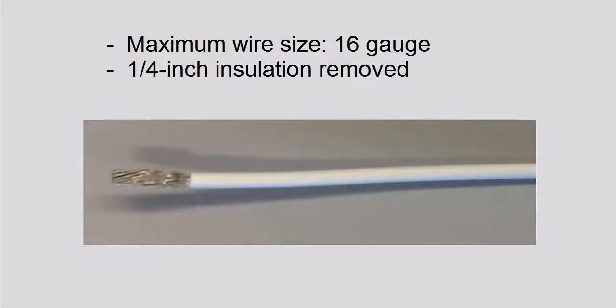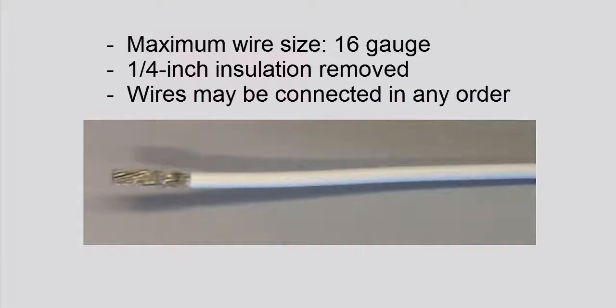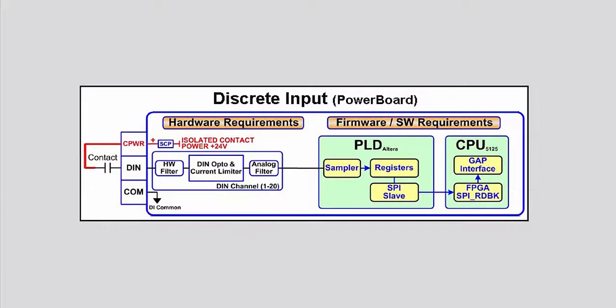Each wire should have a quarter inch of insulation removed to create a connection without exposing too much wire. Please note that the order in which you connect the wires does not matter.